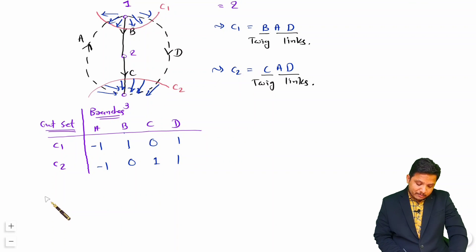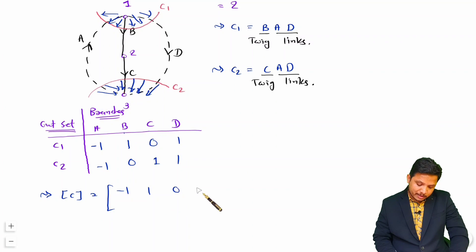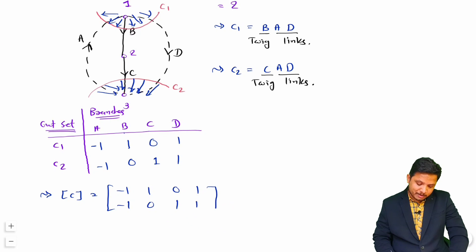The cut set matrix can be written as: first row (C1): -1, 1, 0, 1; second row (C2): -1, 0, 1, 1. This is the cut set matrix.